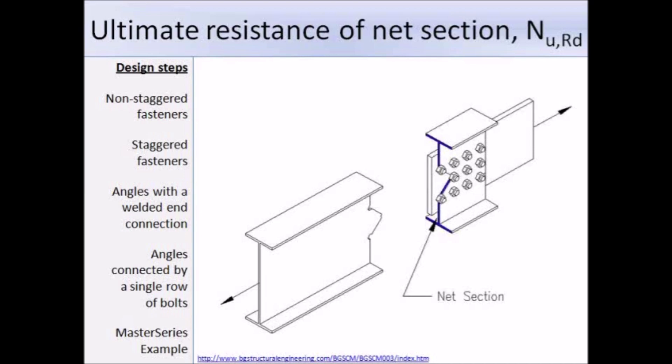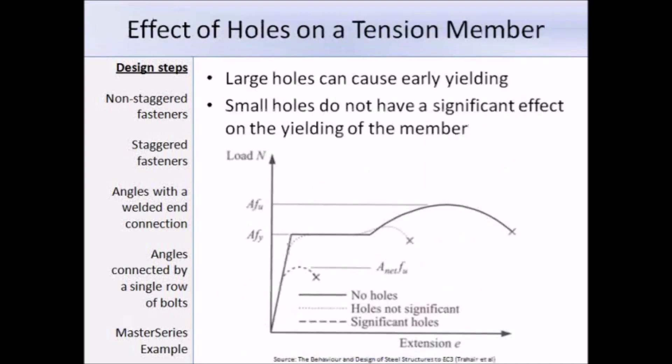Here is a graph showing the effect of holes on a tension member. The solid line shows the load extension behaviour for a tension member with no bolts. The dotted line shows that small holes do not have a significant effect on yielding, as the member reaches steel load due to the strain hardening effect around the small holes. However, for large holes shown by the dashed line, the tension member does not even reach steel load, often due to fracturing occurring around the holes.